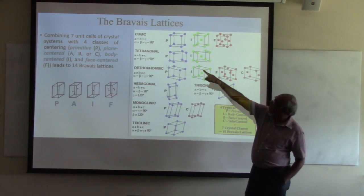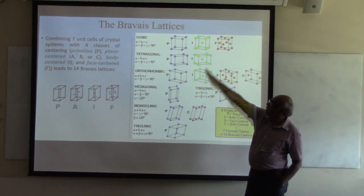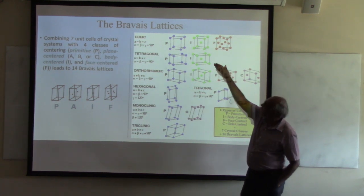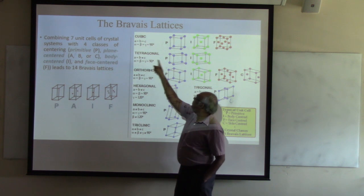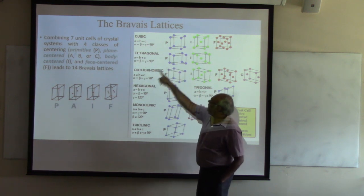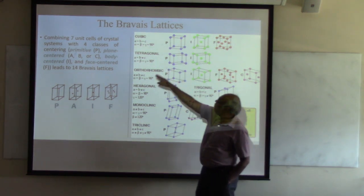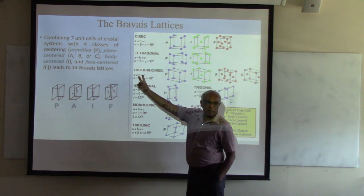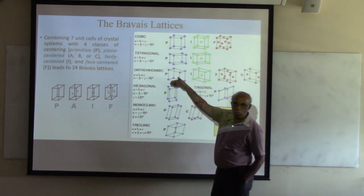Cubic has all A, B, C equal, and alpha, beta, gamma all equal to 90 degrees. Then if one length changes, it becomes tetragonal. Then if two of them are changing, it becomes orthorhombic.